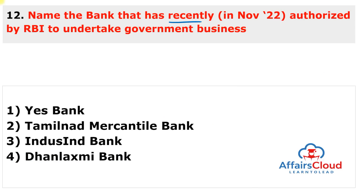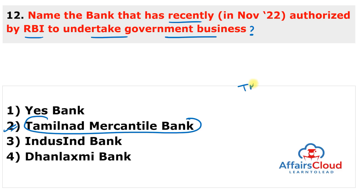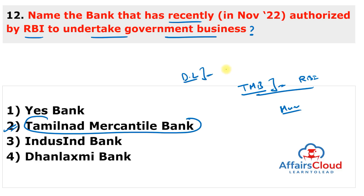Question 12: Which bank was recently authorized by the RBI to undertake government business? The answer is Tamil Nadu Mercantile Bank. The Reserve Bank of India authorized Tamil Nadu Mercantile Bank as an agency bank to undertake government business on behalf of RBI. The agreement was signed in Mumbai, Maharashtra. Additionally, RBI modified its digital lending guidelines issued in September 2022 to protect customers from exorbitant interest rates and check unethical loan recovery practices, effective from 1st December 2022.